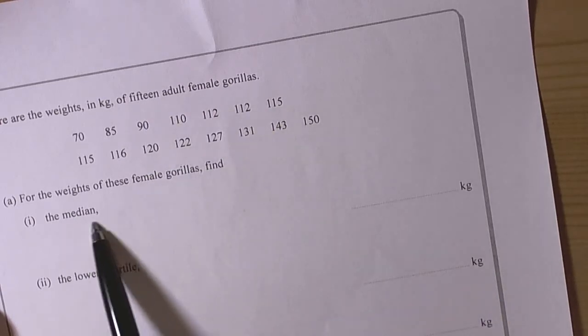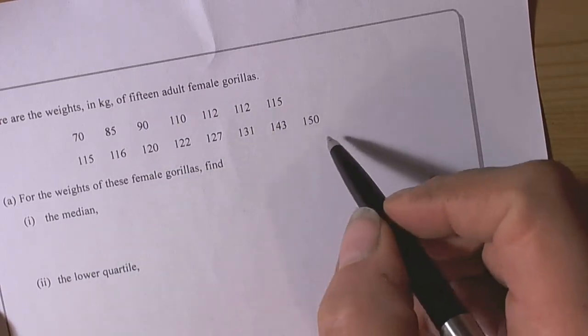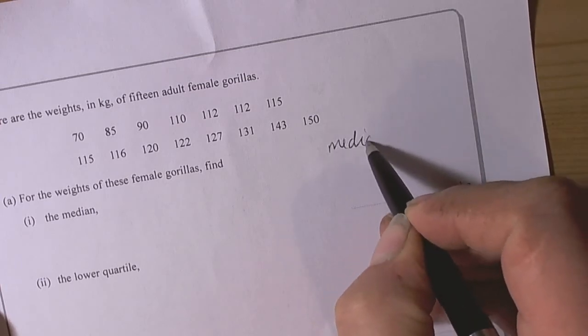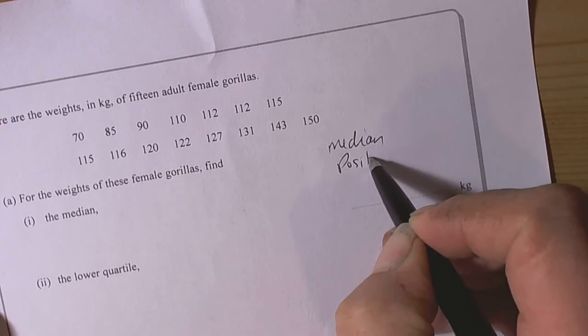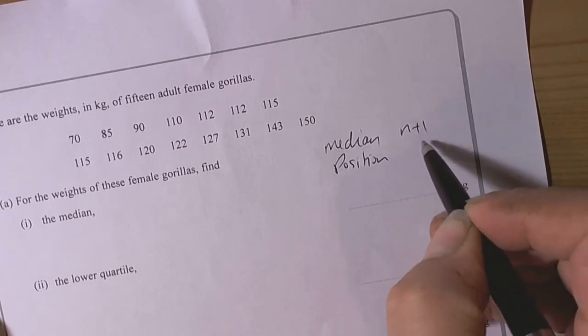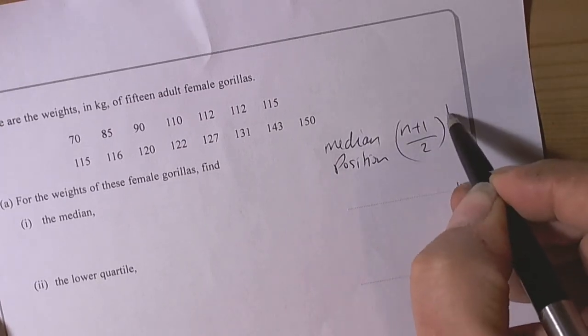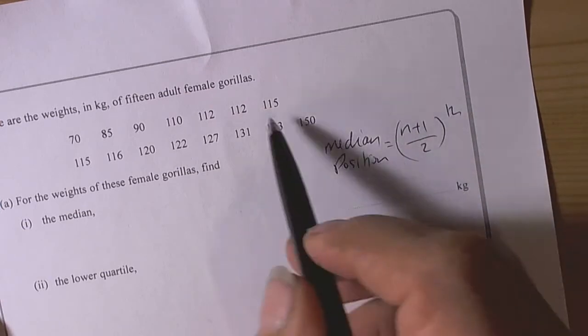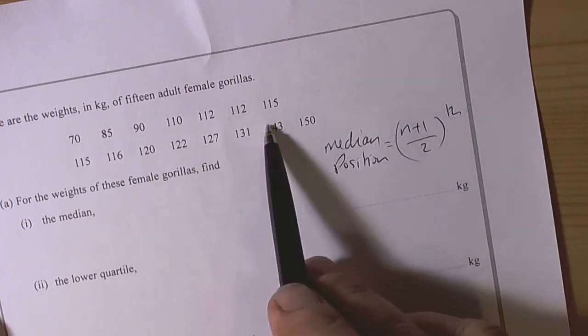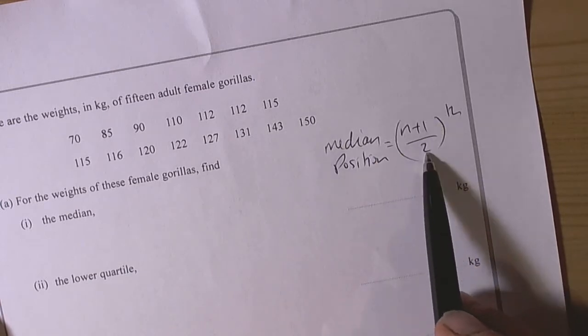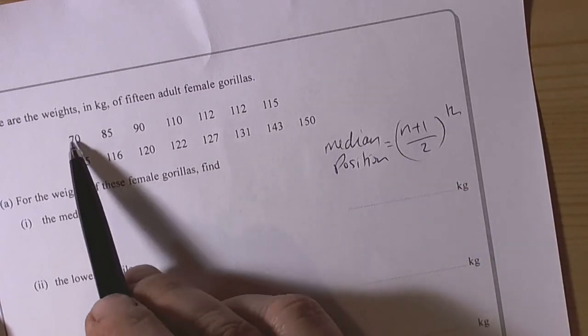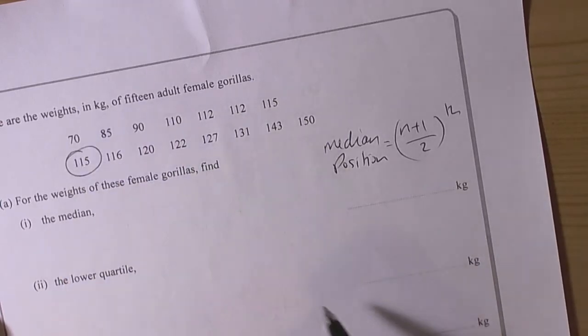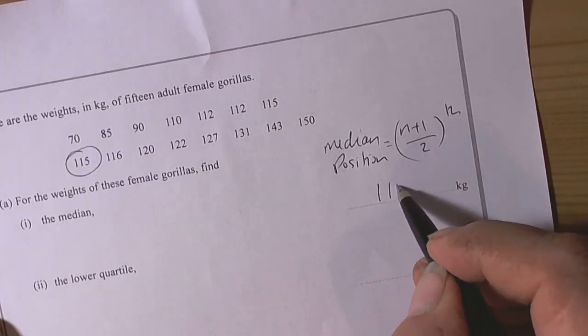There are fifteen adult females so the median is going to be the, well we have a little formula for finding the median position, so the median position is always n plus 1 over 2. So it's the number of data points plus 1 halved, so the number of data points in this case is 15, add 1 to that is 16, halved it is 8. So looking for the 8th data point, so 1, 2, 3, 4, 5, 6, 7, 8. So the 8th data point is 115kg.